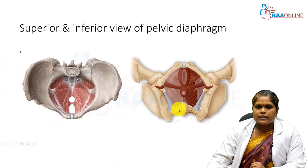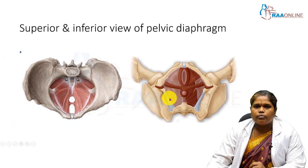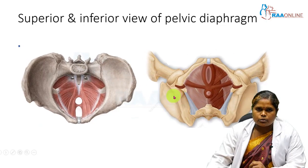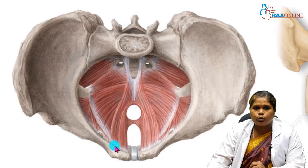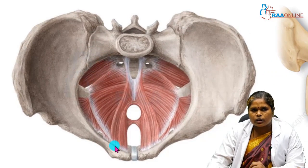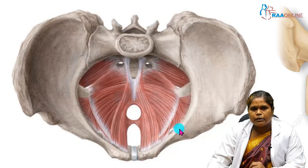Here you can see the superior view and inferior view of the pelvic diaphragm. You can nicely see the pelvic inlet. The pelvic inlet is bounded anteriorly by the pubis, then the arcuate line of the ilium, then the iliopubic eminence, and then the ala of the sacrum on both sides.